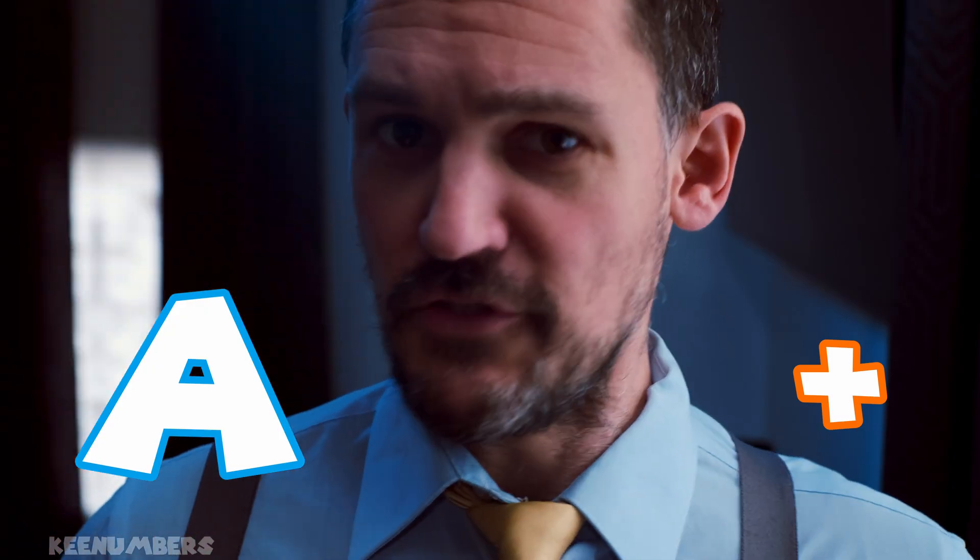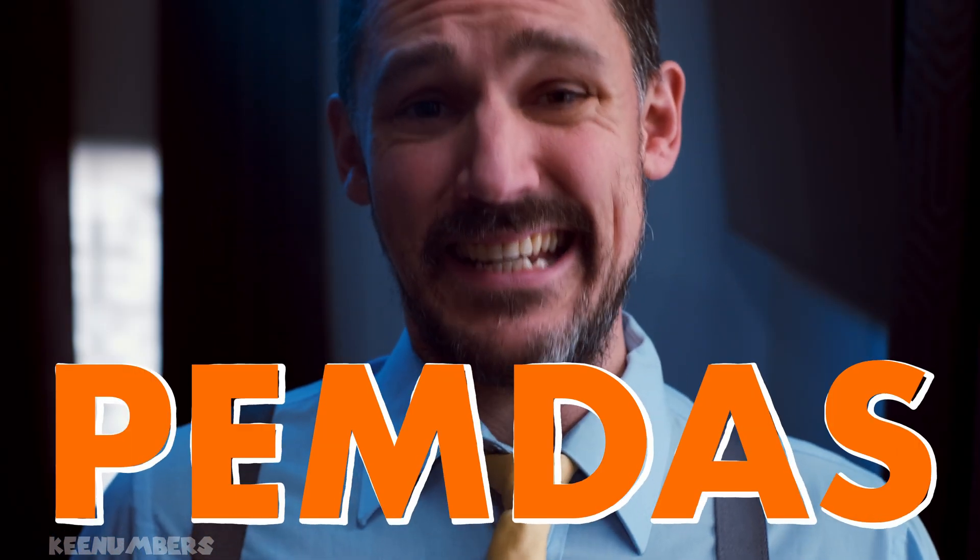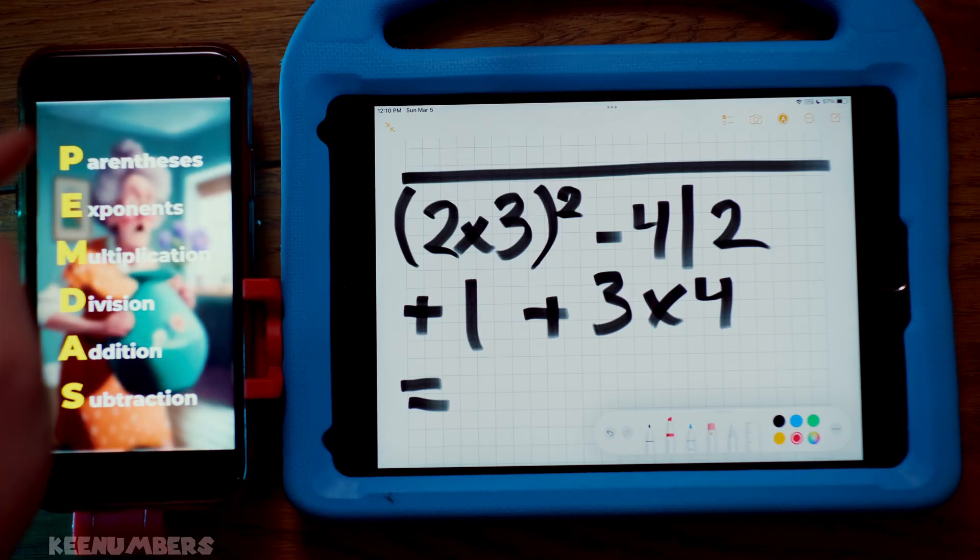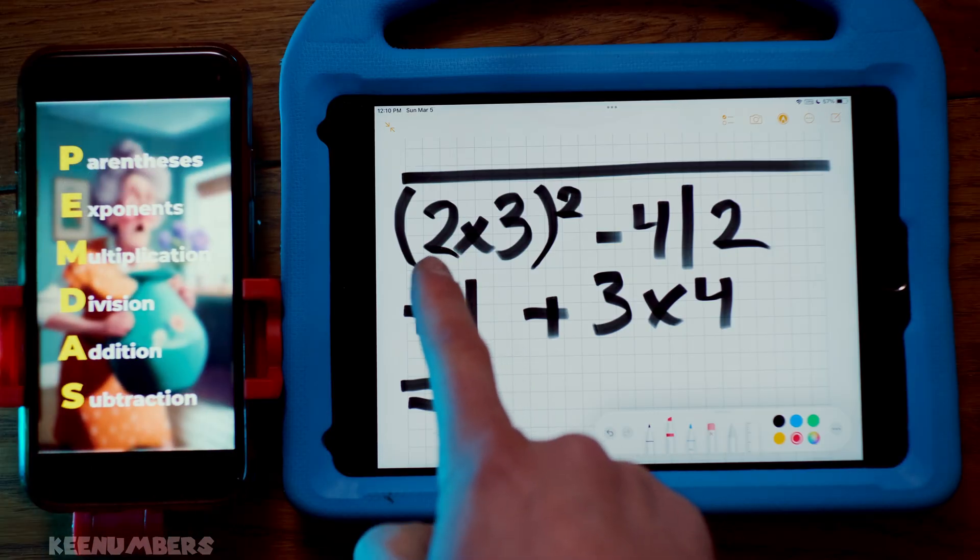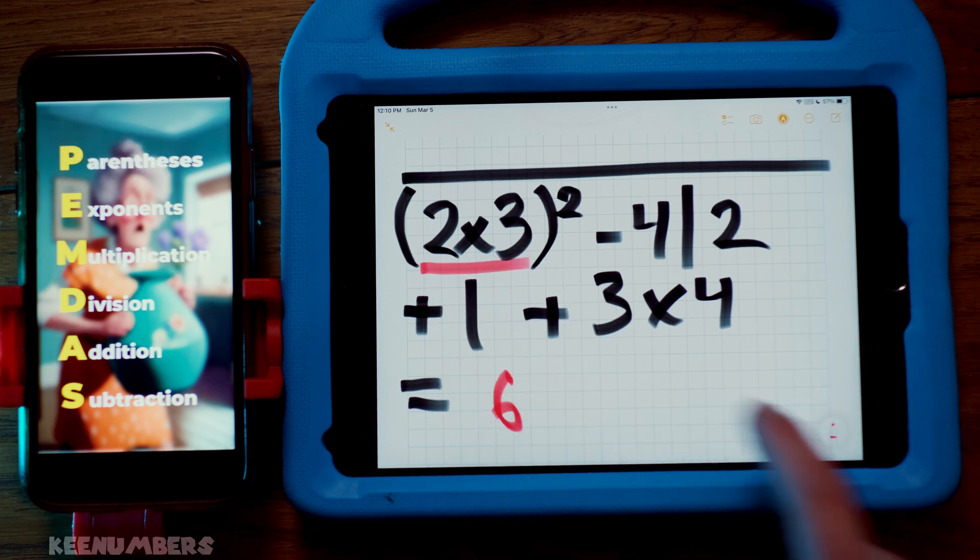Give yourself a checkmark. M is for multiplication. D is for division. A is for addition. S is for subtraction. Please excuse my dear Aunt Sally. PEMDAS. P is for parentheses, so we're going to address this guy first. What is 2 by 3? It is simply 6.